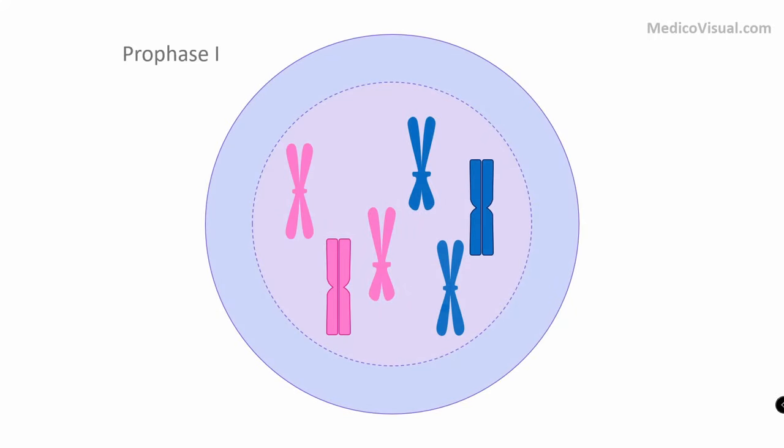In the previous lecture I have already discussed what is meiosis and the different phases or stages of meiosis. From that lecture you must know that prophase one of meiosis is the busiest phase of meiosis. Many things happen in this phase, and because it is the busiest and most important phase, many authors love to subdivide it into different stages or sub-phases.